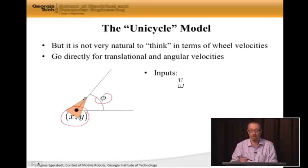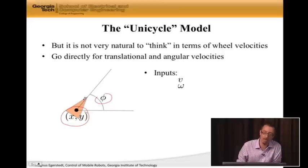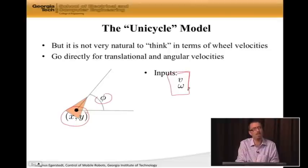So if I have that, my inputs are going to be V, which is speed, and omega, which is angular velocity. So these are the two inputs. They're very natural in the sense that we can actually feel what they're doing, which we typically can't when we have Vr and Vl.